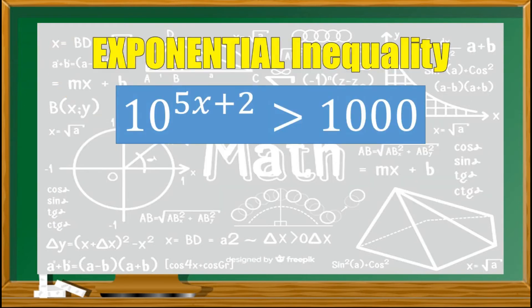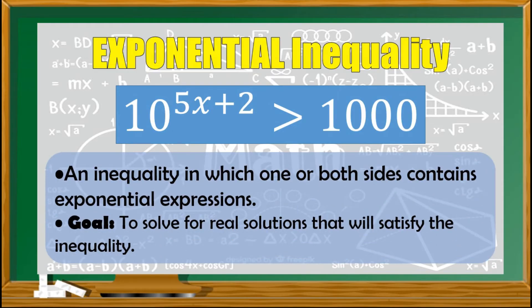Let us first have the definition. 10 raised to 5x plus 2 greater than 1000 is an example of an exponential inequality. It is an inequality in which one or both sides contains exponential expressions, and the main goal in an exponential inequality is to solve for the real solutions that will satisfy the inequality.